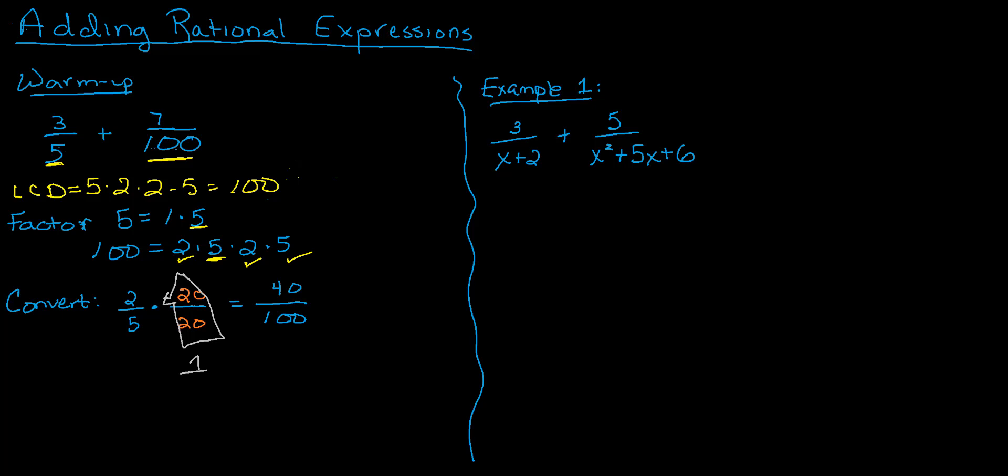My second fraction was all set, 7 hundreds. So my new expression is 40 over 100 plus 7 over 100. I've got 40 one-hundredths plus 7 one-hundredths gives me 47 one-hundredths altogether.